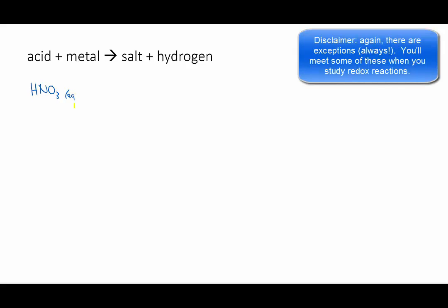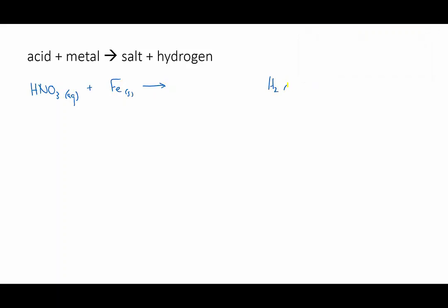Let's look at nitric acid reacting with iron. So one product we know is hydrogen gas. Where does that come from? Well, it must be the protons from the acid. There are no other hydrogen atoms here, so they become the hydrogen gas.